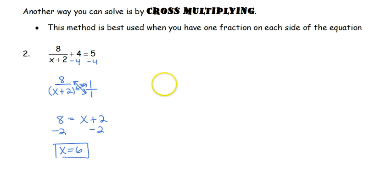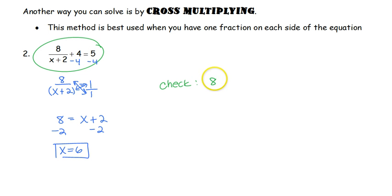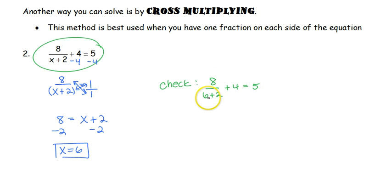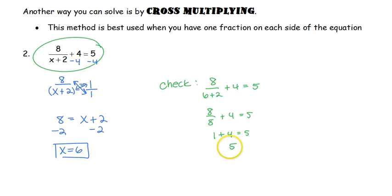Just like before, we check our solution going back to the original equation. We have 8 over x plus 2, so 6 plus 2, plus 4 equals 5. 6 plus 2 is 8; 8 over 8 is 1, plus 4 gives us 5. 5 equals 5, therefore x equals 6 is our solution.